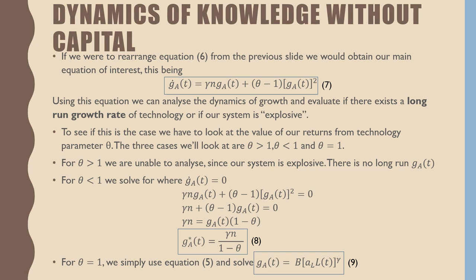For θ = 1, we simply use equation 5 and solve it. Our long-run growth rate of technology is just dependent on the proportion of labor we dedicate to our R&D sector.